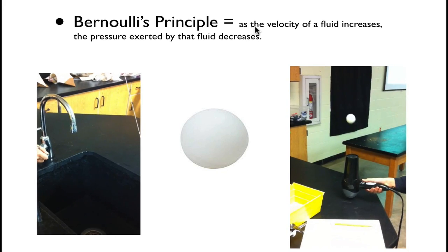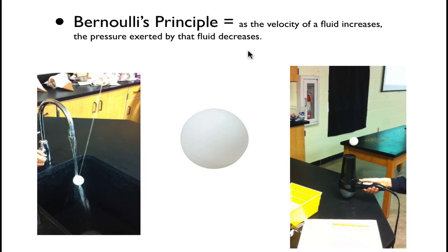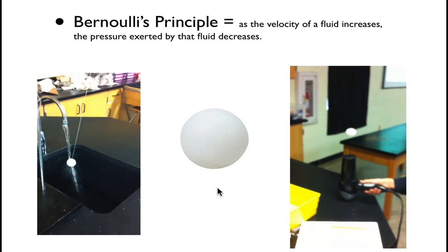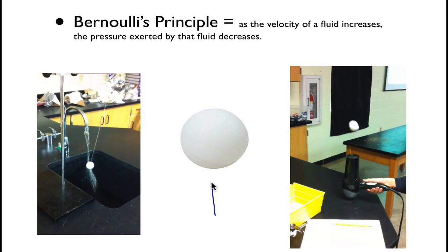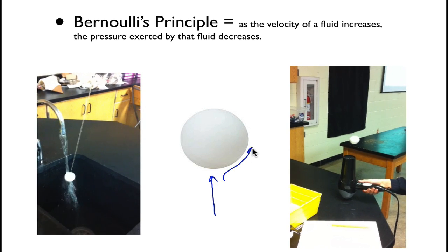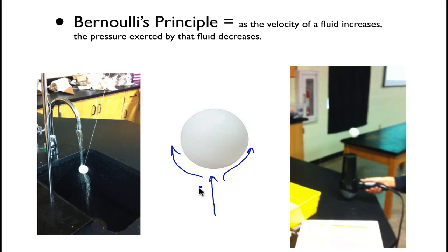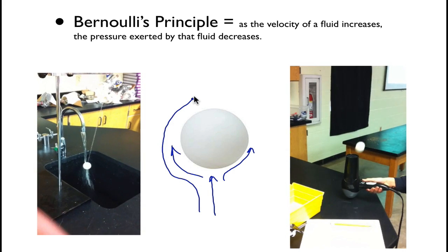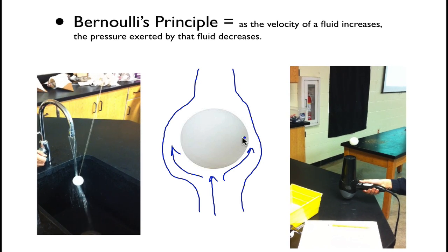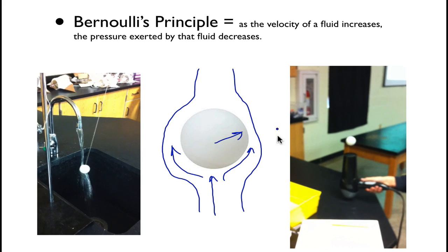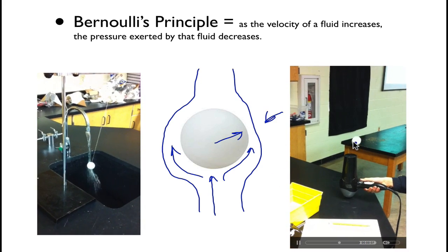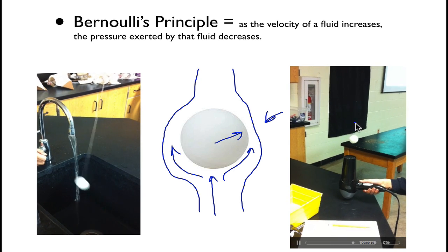So Bernoulli's principle simply tells us as the velocity of a fluid increases, pressure exerted by that fluid decreases. And so if we look at the hair dryer here, so as the air is blowing up on the ping pong ball, so it's going around, kind of around the ping pong ball on all sides, well, right in this little channel here around the ping pong ball, we have fast-moving air, so we have a low-pressure area. So every time it tries to move out of that low-pressure area, you have the stagnant air that's kind of sitting there, and you have high-pressure areas here, so it pushes it back.